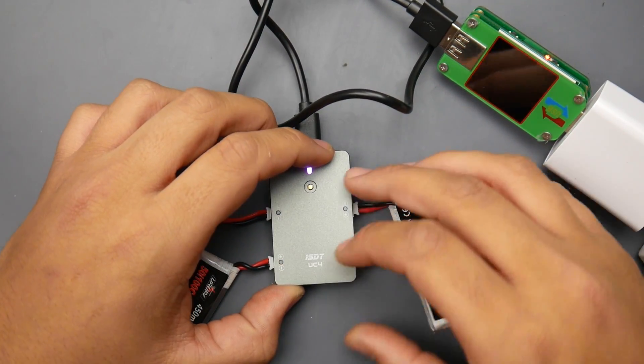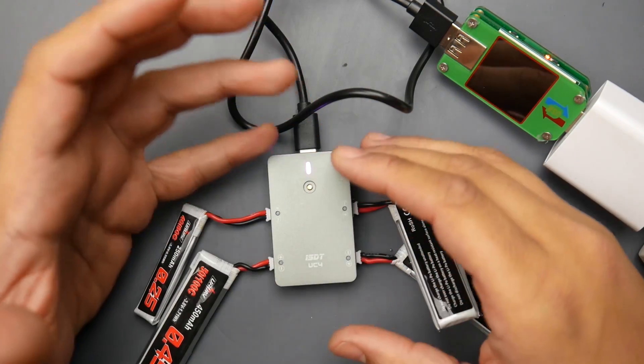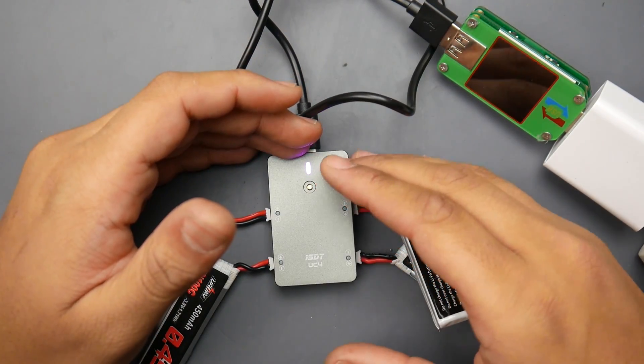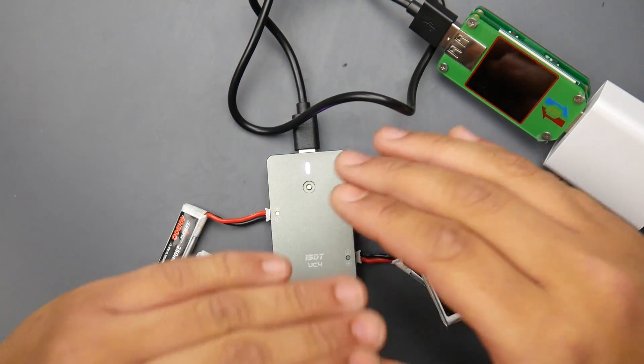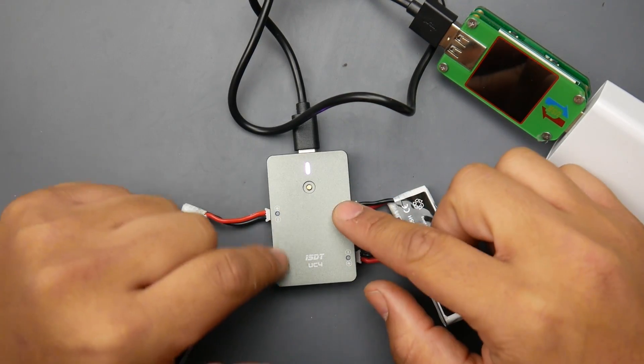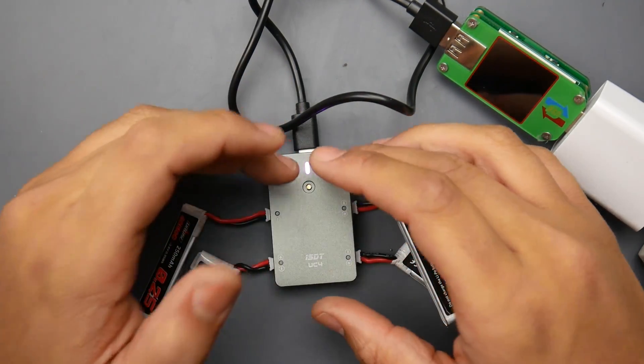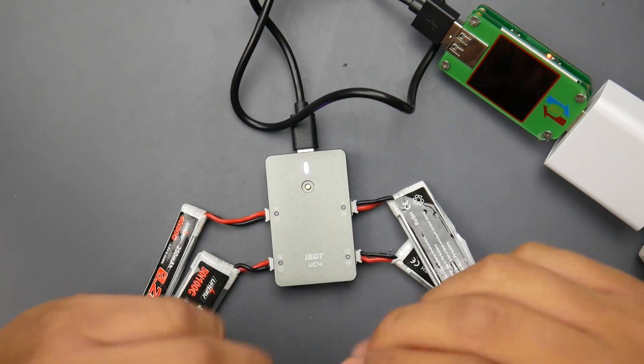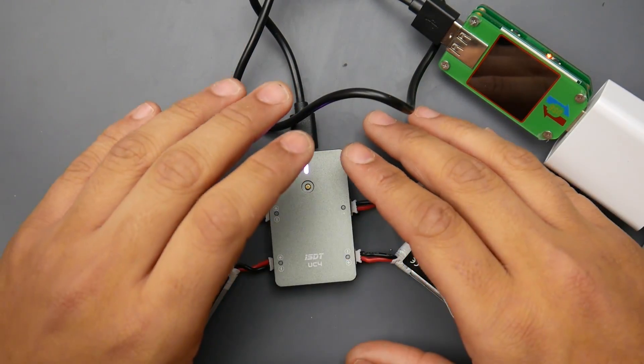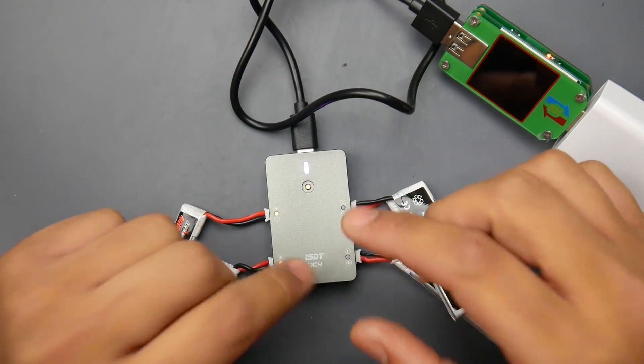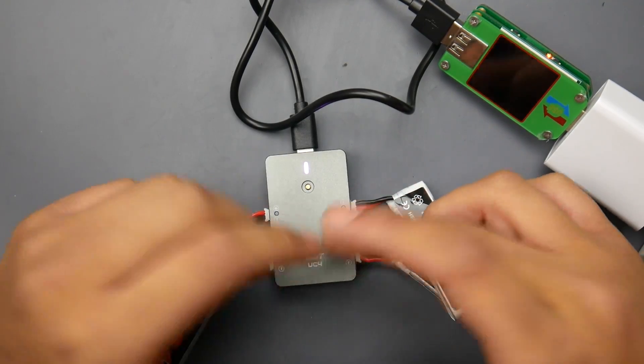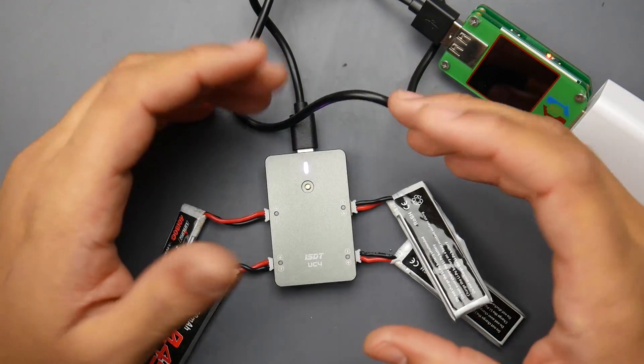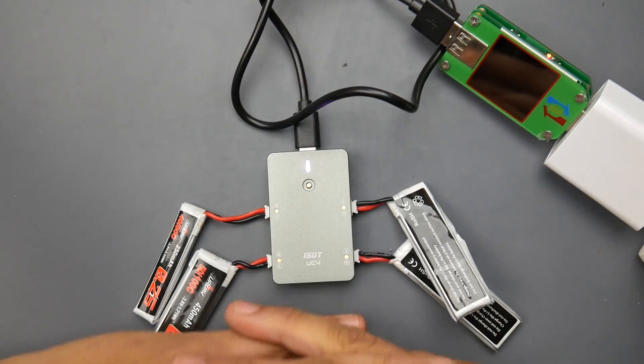But then again I wish there's some way we can possibly update it, or they can release some sort of an update that'll allow it to charge HV batteries. Or you know, they should have put some other button or something else that'll allow me to switch between normal and HVs. I don't care if I can choose separate, I mean just all of them. If it says HV then I don't mind having to charge all the HVs and then switch over back to just a normal LiPo and then charge those.